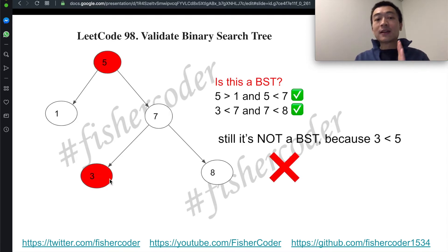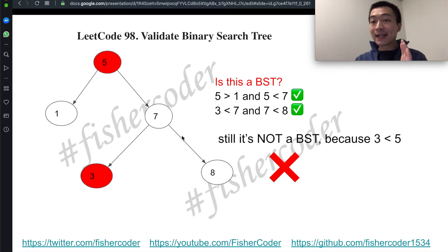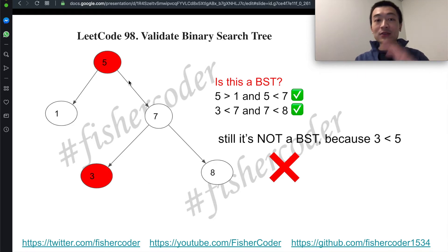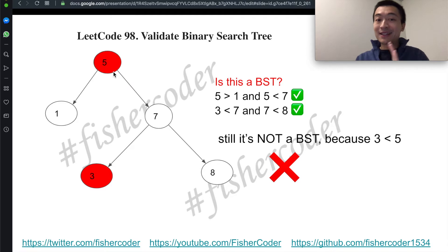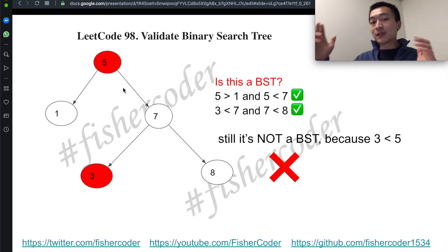Of course not. Per the definition of a valid BST, the right subtree must contain only nodes with keys greater than the root's key — meaning every single node on the right side must be greater than the root's value. Although the subtree rooted at 7 is itself a valid BST, when placed in the entire tree, node 3 is on the right side of 5 but is smaller than 5. That's not permissible. So simply doing a depth-first search comparing each node's left and right to only its immediate parent is not enough.